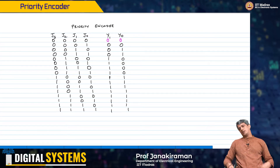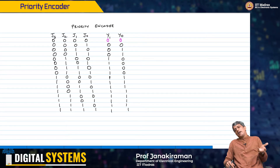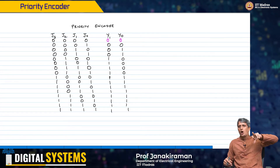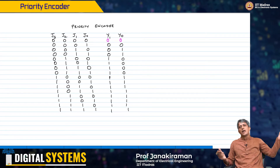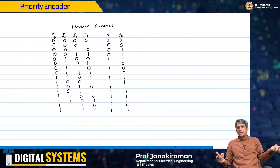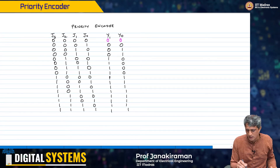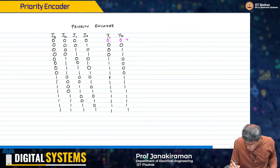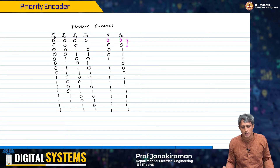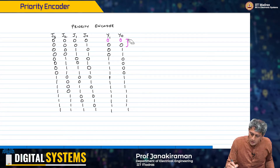But the problem is this does not tell you if j0 actually is on, or is it the case that none of the inputs are active. Therefore, these two cases — you cannot tell the difference.